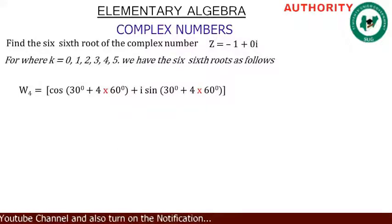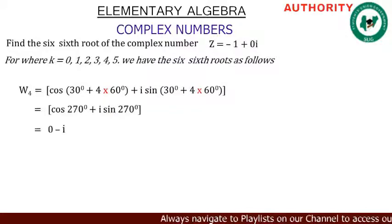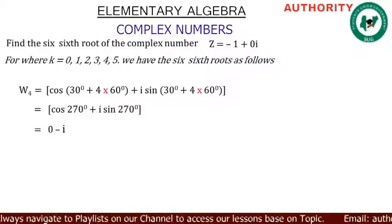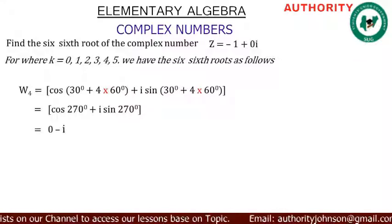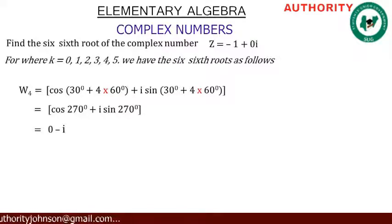For k = 4: w₄ = cos(30 + 4·60°) + i·sin(30 + 4·60°). Four times 60 = 240, and 240 + 30 = 270°. cos(270°) = 0, and sin(270°) = -1, so minus 1 times i gives -i. Therefore w₄ = -i.